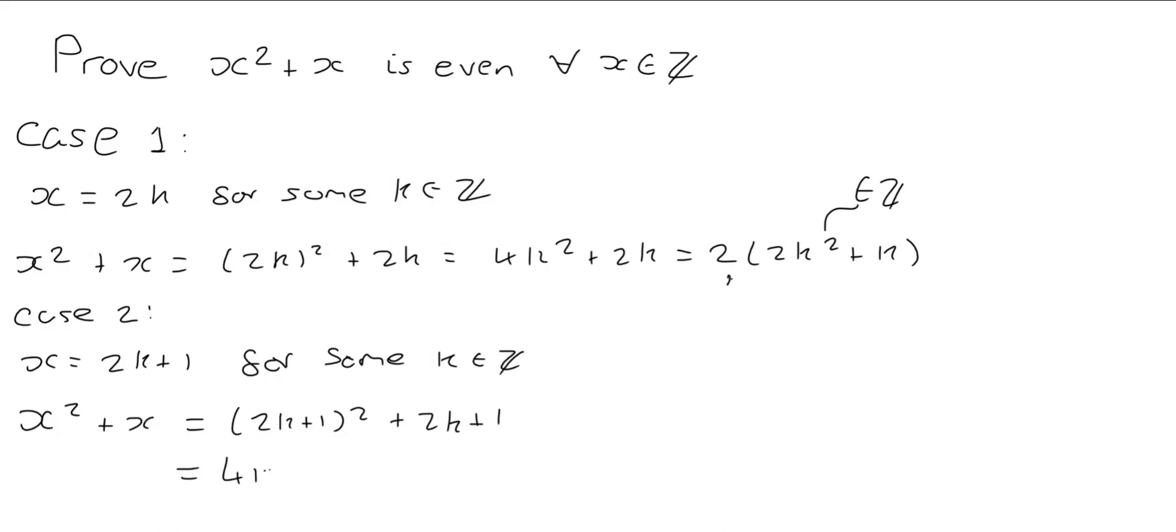So this is 4k squared plus 4k plus 1 plus 2k plus 1. We can collect some terms. We're going to get 4k squared plus 6k plus 2. Again we can factor out 2, we get 2 times 2k squared plus 3k plus 1.